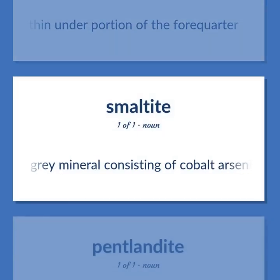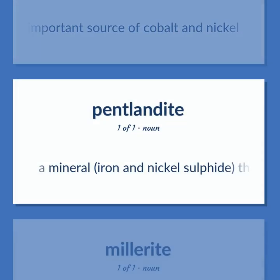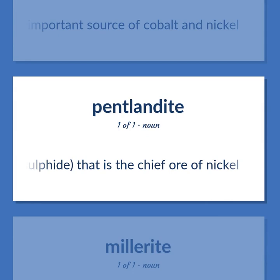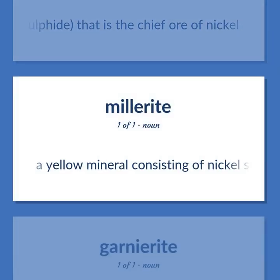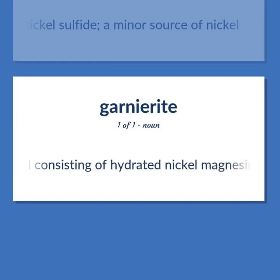A gray mineral consisting of cobalt arsenide and nickel — an important source of cobalt and nickel. A mineral, iron and nickel sulfide, that is the chief ore of nickel. A yellow mineral consisting of nickel sulfide, a minor source of nickel. A green mineral consisting of hydrated nickel magnesium silicate, a source of nickel. Become our student and get access to effective and free educational materials. Subscribe to our YouTube channel to become a part of our growing YouTube community and to learn English effectively.